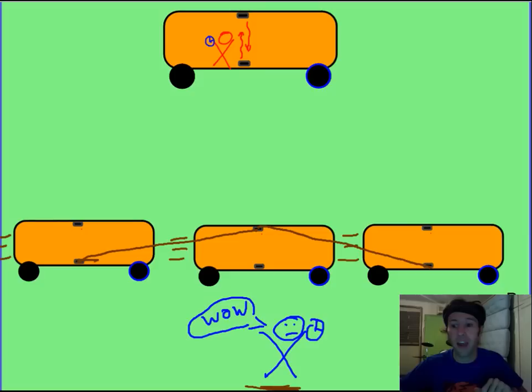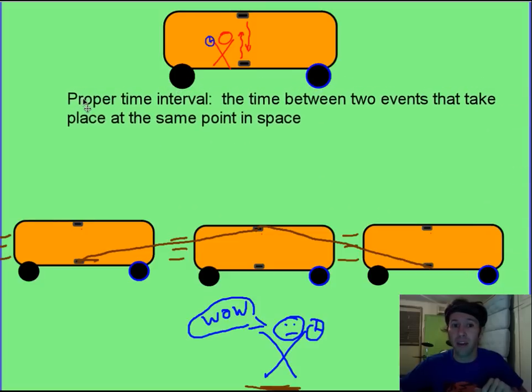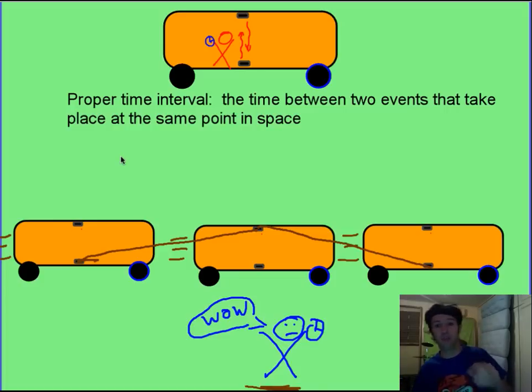What we're going to say is that red man up here measures the proper time interval. Because from what he watched it, it happened at the same point in space. The emitter and the receiver, it's the same thing. From his point of view, it hasn't moved. This guy down here, blue man, measures a different time.